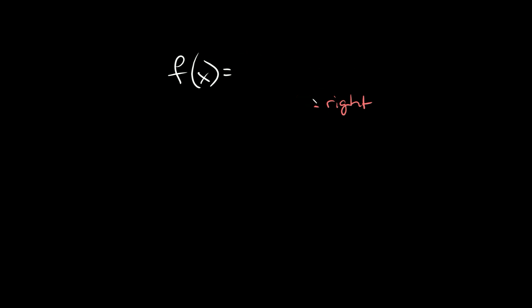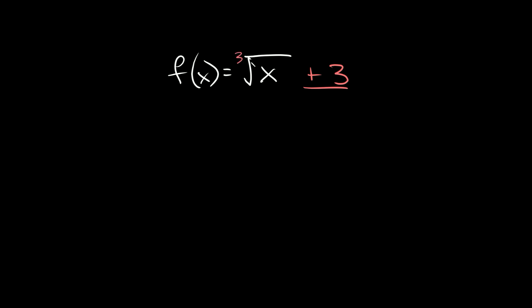Now what if we had a number on the outside? So if we had something like f of x is equal to the square root of x plus three — this number out here shifts your graph up or down. So here we have a positive three, so we would simply shift our graph up three spaces. Same thing for a cube root, fourth root — all of those would just be shifted up or down by this number.